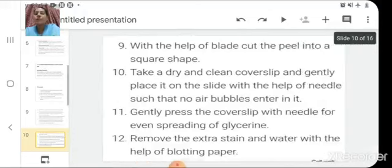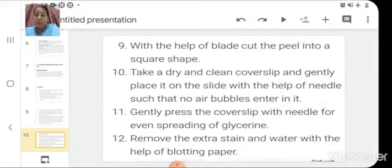And then with the help of blade, cut the peel into the square shape. Take a dry and clean cover slip and gently place it on the slide with the help of a needle such that no air bubble enter in it. Children, this is an important step. Once your slide is there, on that you have kept one drop of water and then your sample of cell. Then after that you have put some glycerin again. Because you need to fix the sample onto the slide, you need to cover it with a cover slip.